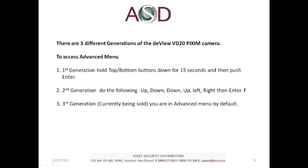For first generation cameras, hold the top and bottom buttons down for 15 seconds and then push enter. For the second generation it's a little more complicated: go up, down, down, up, left, right, and then enter. For the third generation — the ones currently being provided — you're in the advanced menu by default.